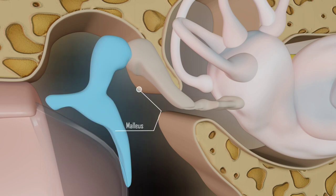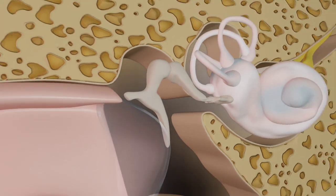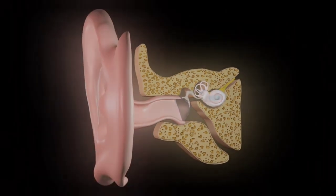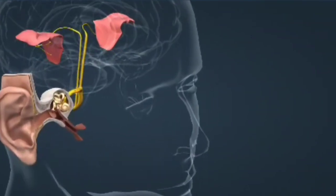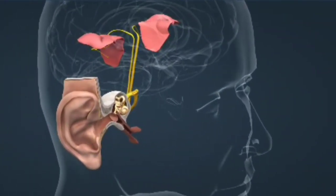These three bones play an important role by amplifying and regulating the sound waves transmitted to the cochlea. The human ear is an intricate and important organ in the body, enabling us to hear the world around us.